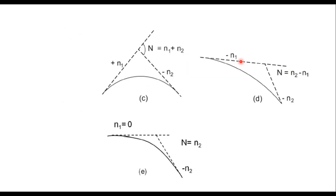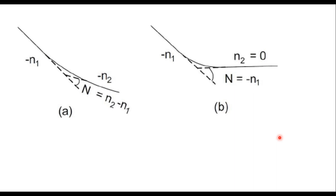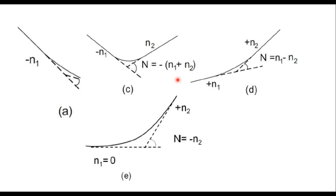Similarly, when a positive gradient meets a negative gradient, or when a negative gradient meets a steeper negative gradient, or when level ground meets a negative gradient, or when a steep negative gradient meets a mild negative gradient — all these are cases of vertical curves. Negative gradient meeting flat ground, or negative gradient meeting a positive gradient, or positive gradient meeting a steeper positive gradient, or flat ground meeting a positive gradient — in all these cases it is important to smooth the point of change of gradient through a vertical curve.